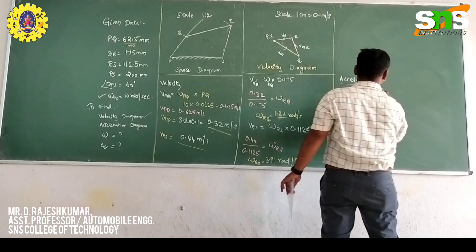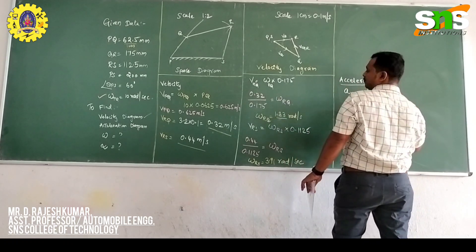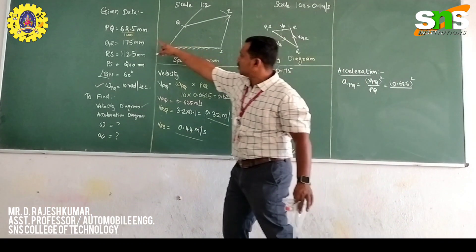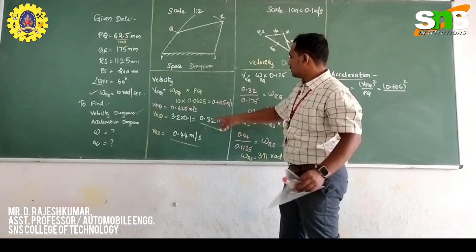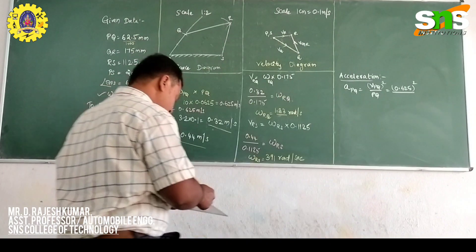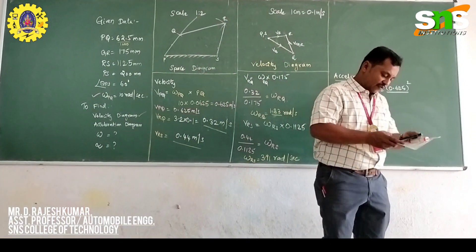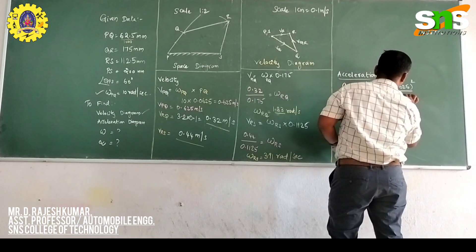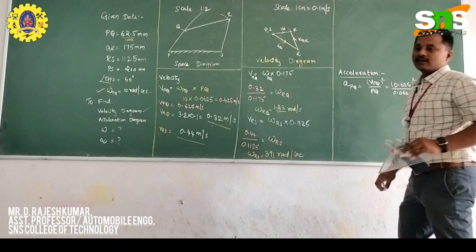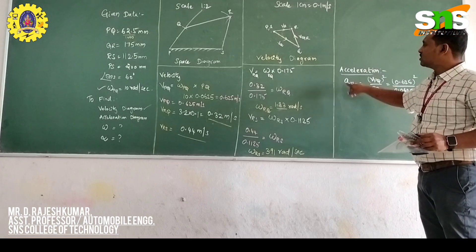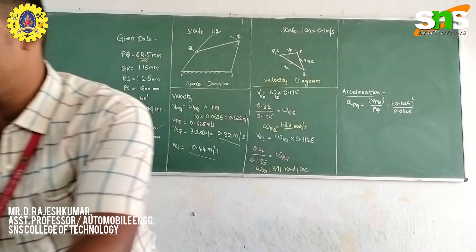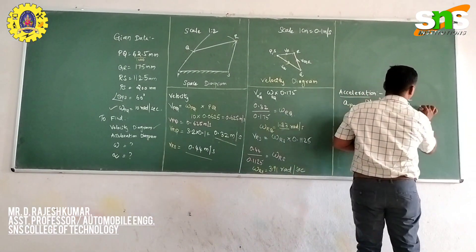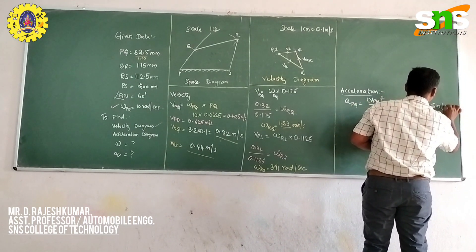The velocity of PQ is 0.625 m/s and the length is 0.0625 m. Dividing gives acceleration of PQ = 6.25 m/s². Similarly, acceleration of link QR = (0.32)² ÷ 0.175 = 0.634 m/s².